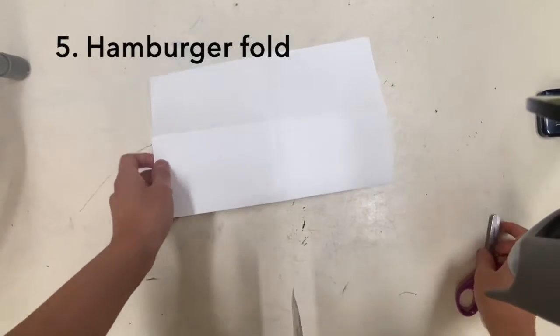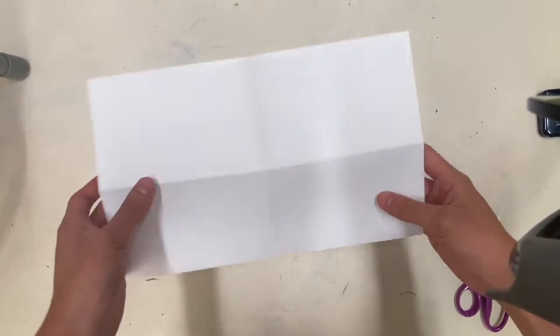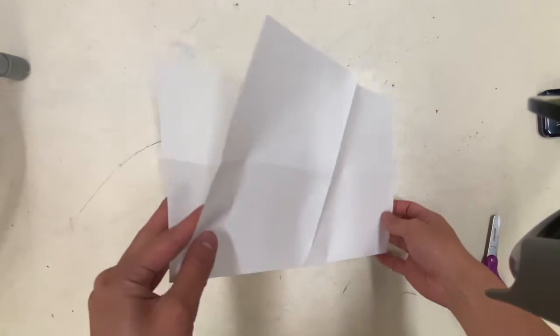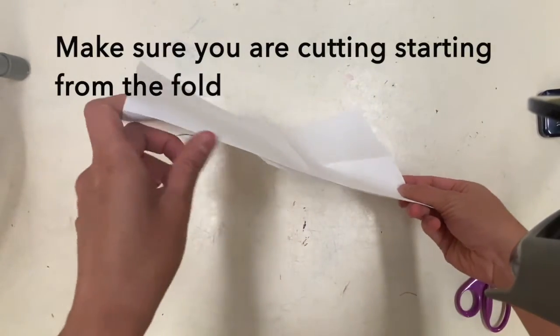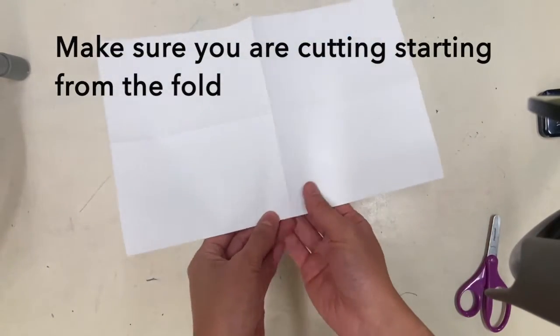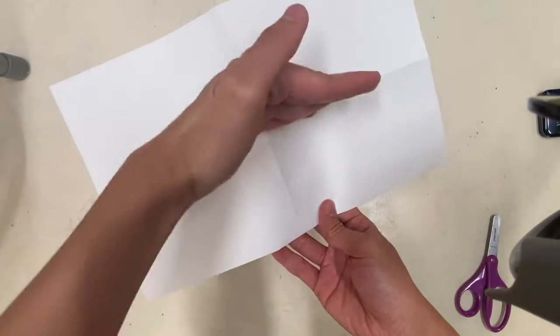After I've done my hamburger fold, I am ready to cut. On my fold in half, you see that there is a plus sign with my folds. I'm going to cut from the closed side of my folded paper. The fold is at the bottom. I'm going to cut in the middle up to this horizontal line.